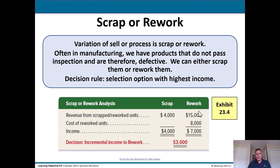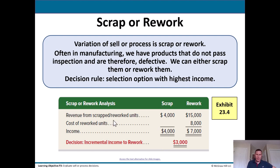Scrap or rework is a variation of sell or process. In manufacturing, products that fail inspection can either be scrapped or reworked. Revenue from scrapping the defective units is $4,000; reworking them generates $15,000 but costs $8,000, yielding income of $7,000. The decision is to rework, generating an extra $3,000 in additional revenue.